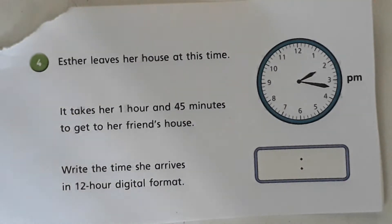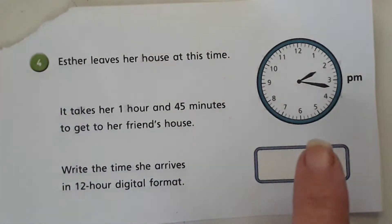Reading the question: Esther leaves her house at this time shown on the clock—we know it's in the afternoon. It takes her 1 hour and 45 minutes to get to her friend's house. Write the time she arrives in 12-hour digital format. The first thing that would benefit you is to convert the analog time to digital time.